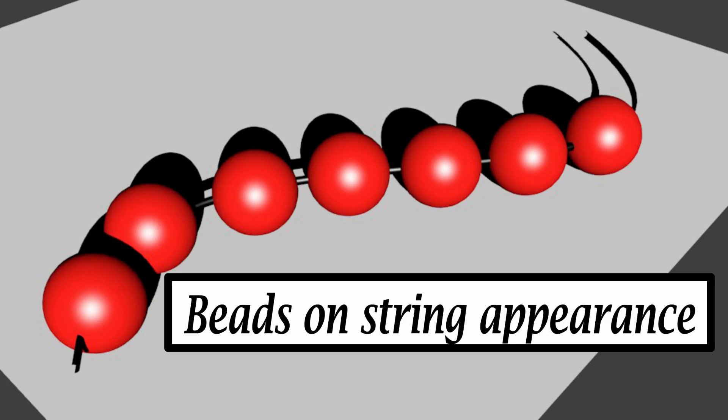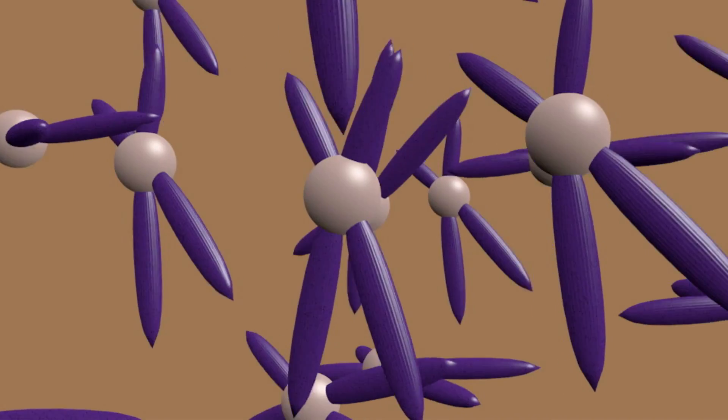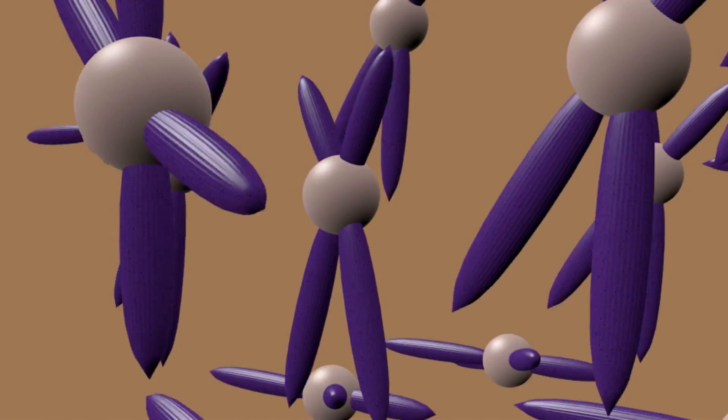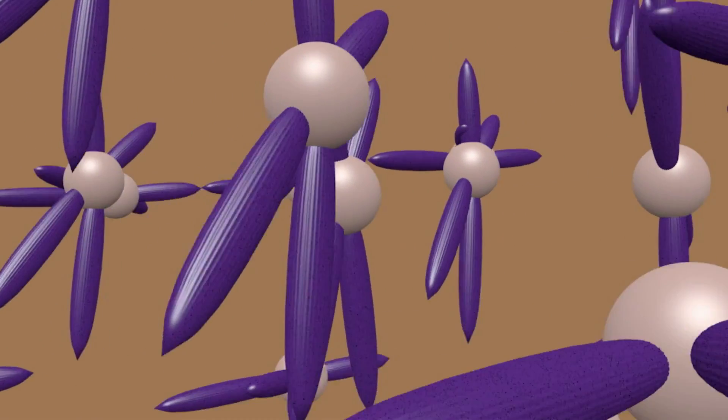This gives a beads-on-string appearance. This structure gets coiled even more to become a highly packed chromosome.